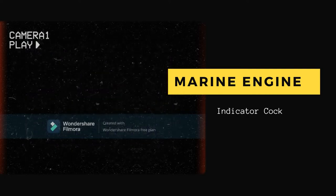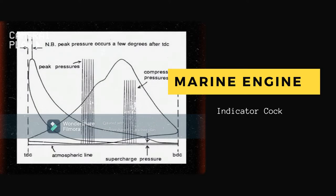Too long a diagram would indicate that the drum spring is, perhaps, not tensioned sufficiently and the drum is skidding beyond its warranted travel. Too short, and maybe the drum is incorrectly set up and insufficient rotation is occurring.